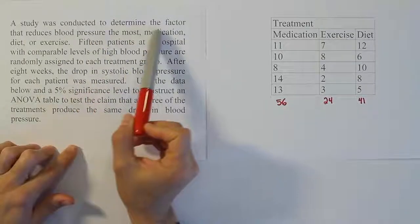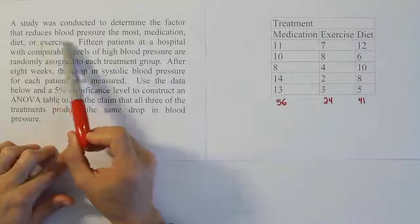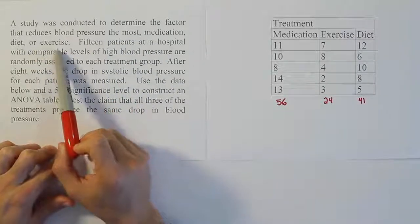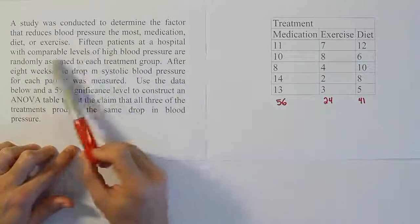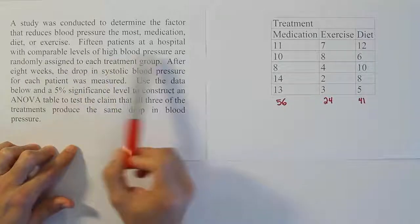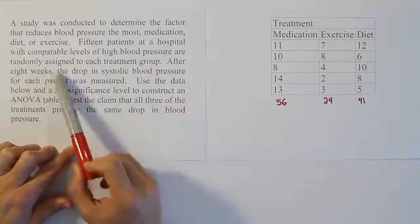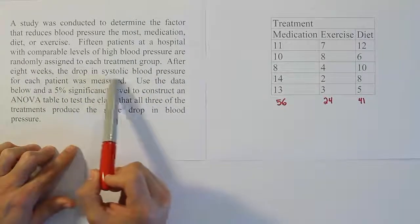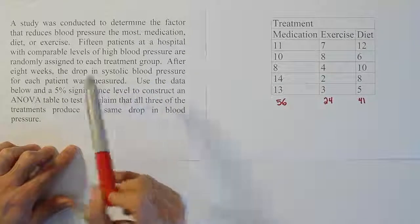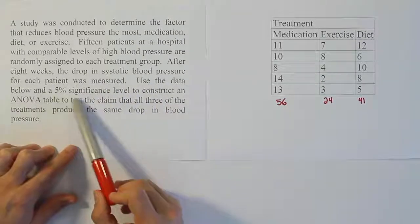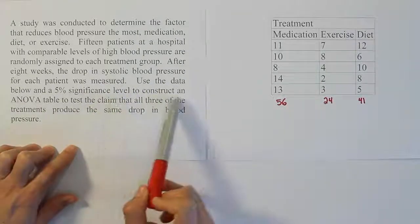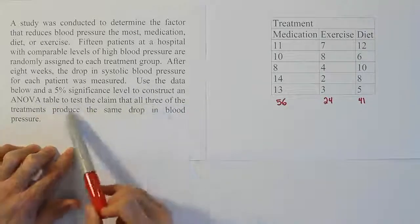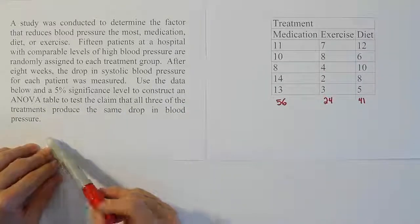A study was conducted to determine the factor that reduces blood pressure the most: medication, diet, or exercise. Fifteen patients at a hospital with comparable levels of high blood pressure are randomly assigned to each treatment group. After eight weeks, the drop in systolic blood pressure for each patient was measured. Use the data below and a 5% significance level to construct an ANOVA table to test the claim that all three treatments produce the same drop in blood pressure.